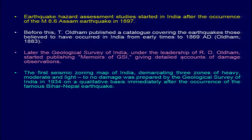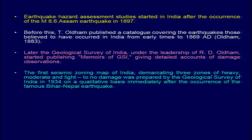Because of the lack of instrumentation earlier, records of past earthquakes were studied mainly using damage patterns, from which isoseismic maps were generated. The first seismic zonation map of India, demarcating three zones — heavy, moderate, and light — was prepared by the Geological Survey of India in 1934, based on the occurrence of the Bihar-Nepal earthquake of that year, a large earthquake close to the India-Nepal border.